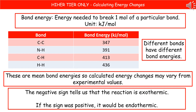For those doing the higher tier, you need to know how to calculate energy changes. The bond energy is the energy needed to break one mole of a particular bond — they'll give you a table with the different bonds and their bond energies. Note that these are mean bond energies, so calculated energy changes may vary from experimental values. The sign is important: add up the bond energies of everything in your reactants, then add up all the bond energies for your products, and subtract one from the other. A negative result means an exothermic reaction; a positive result means an endothermic reaction.